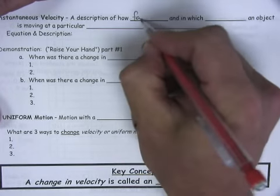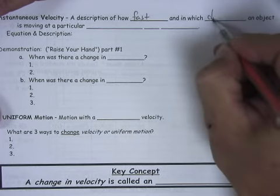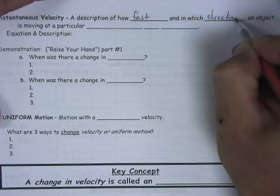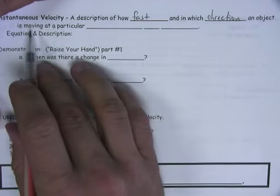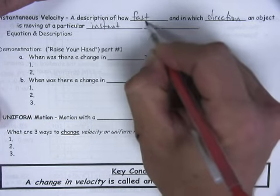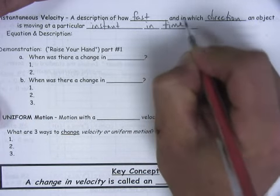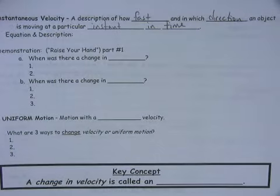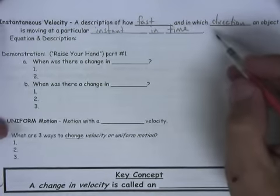And so here it is. It's a description of how fast and in which direction an object is moving in a particular instant in time. So the only way we're going to be able to calculate instantaneous velocity is if we make a time interval, kind of what we're doing out on the street, measuring the cars, make our time interval as small as possible. And if we make it as small as possible, then our velocity will be an instantaneous velocity instead of an average velocity.